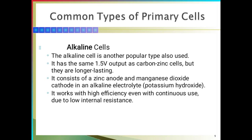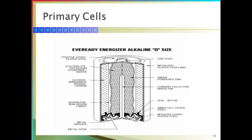Here, zinc is the anode and manganese dioxide is the cathode. The electrolyte solution is known as potassium hydroxide. It works with high efficiency even with continuous use, and it has low internal resistance. This is the structure of the primary cell. At the bottom, the negative cover of plated steel is available. At the top, the positive cover of plated steel is available. Inside the everyday battery, these contents are available. Alkaline battery is a very good example of a primary cell.